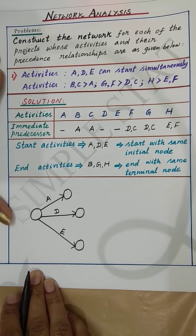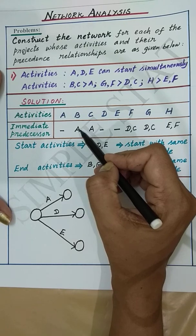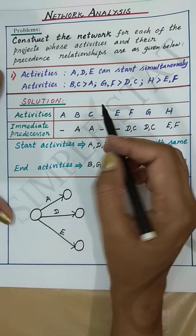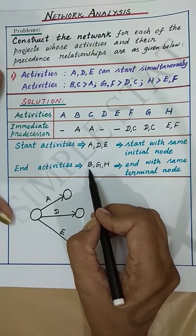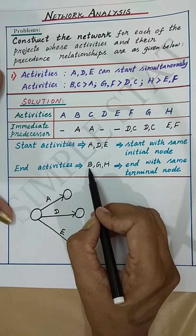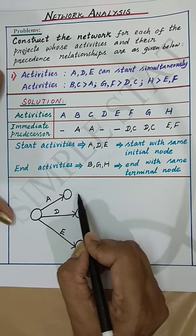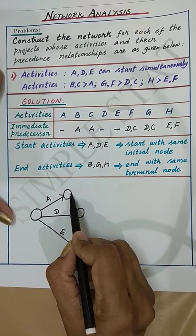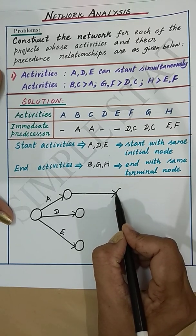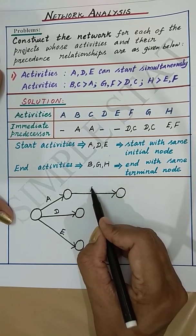Activity B can start after the completion of A, and we know that activity B is also one of the end activities. Let's now draw activity B.